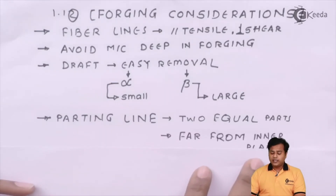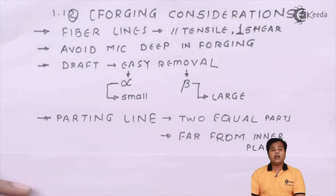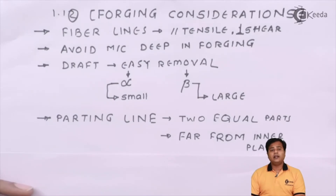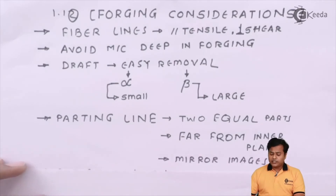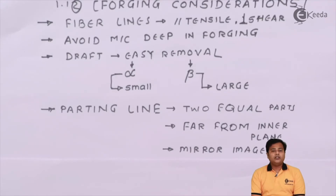The parting line should be far from the inner plane. Your material is going to cool down slowly, and if your parting line is quite close to the inner core or inner plane, it will be uneven. But if it is as far as possible from the inner plane, it will not have an adverse effect on the parting line, because the cooling rate at the inner plane and cooling rate at the outer plane will be different. The next consideration is the mirror image — when we prepare the parts in forging, make sure that both of them are mirror images of each other above the parting line. That will help the parting line to be created very easily.